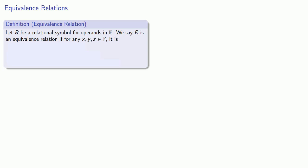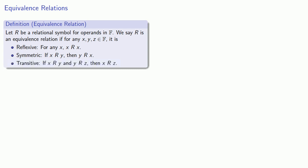It is reflexive — so that for any x, x is related to itself. Symmetric — if x is related to y, then y is related to x. And transitive — if x is related to y, and y is related to z, then x is related to z.